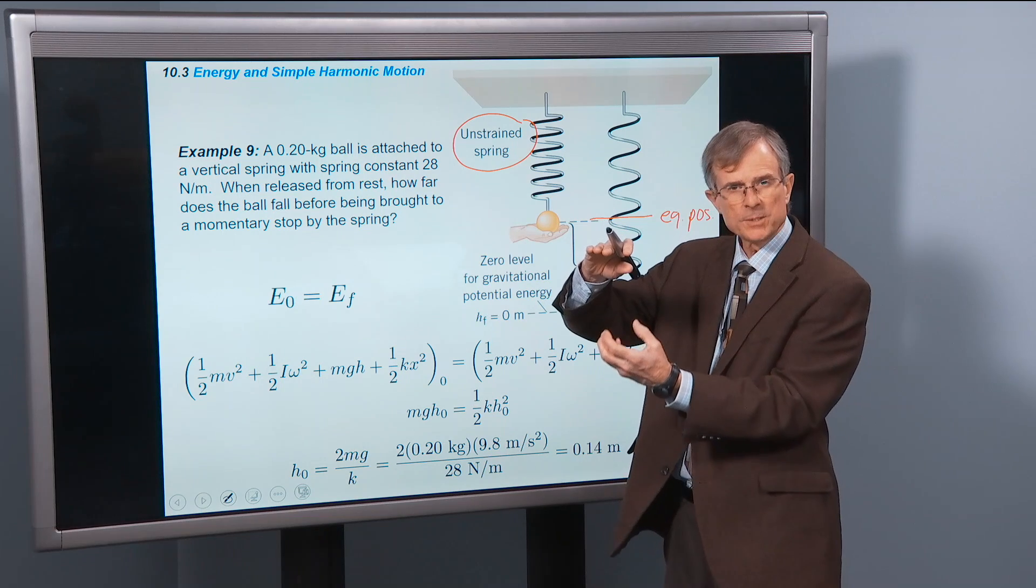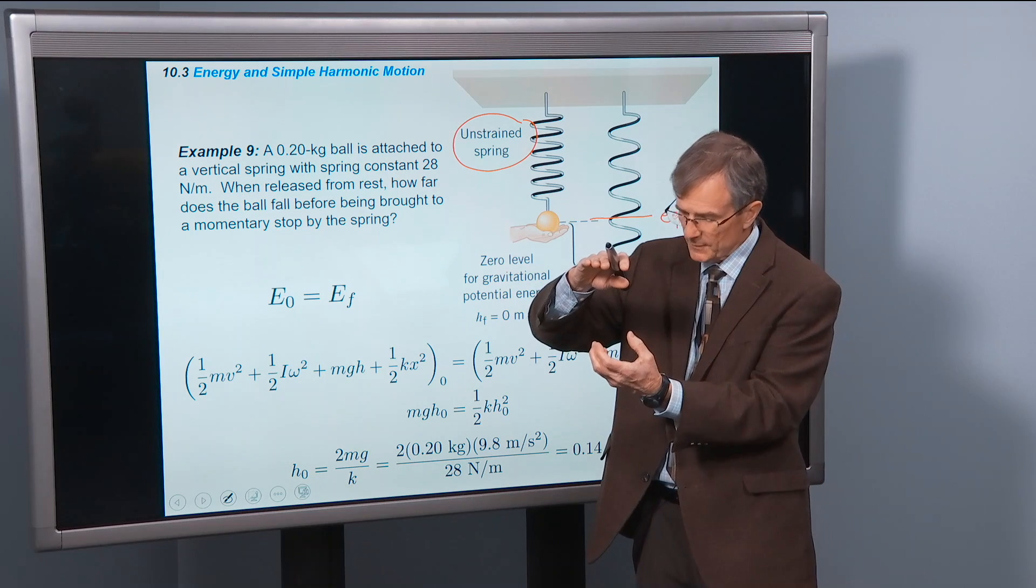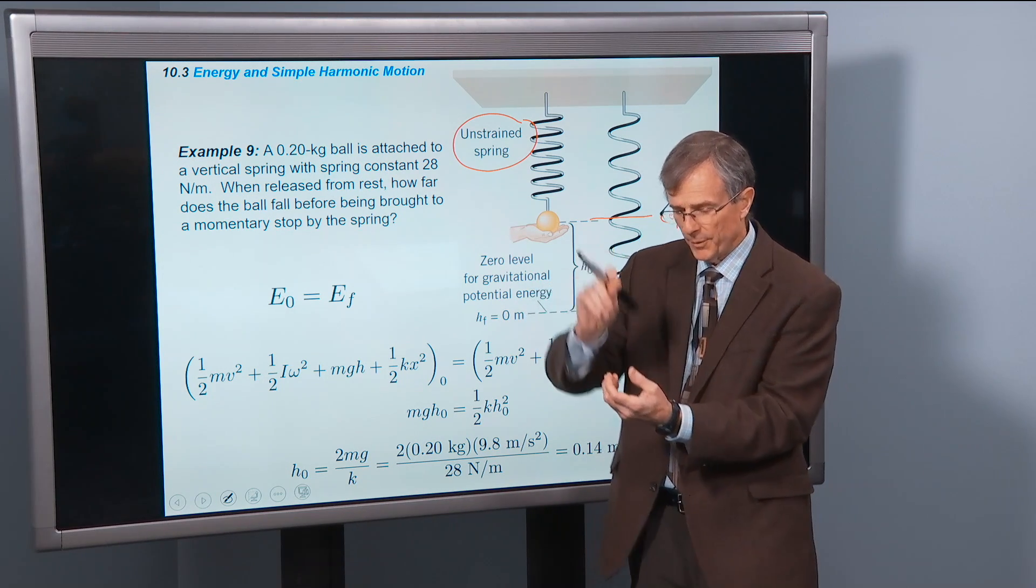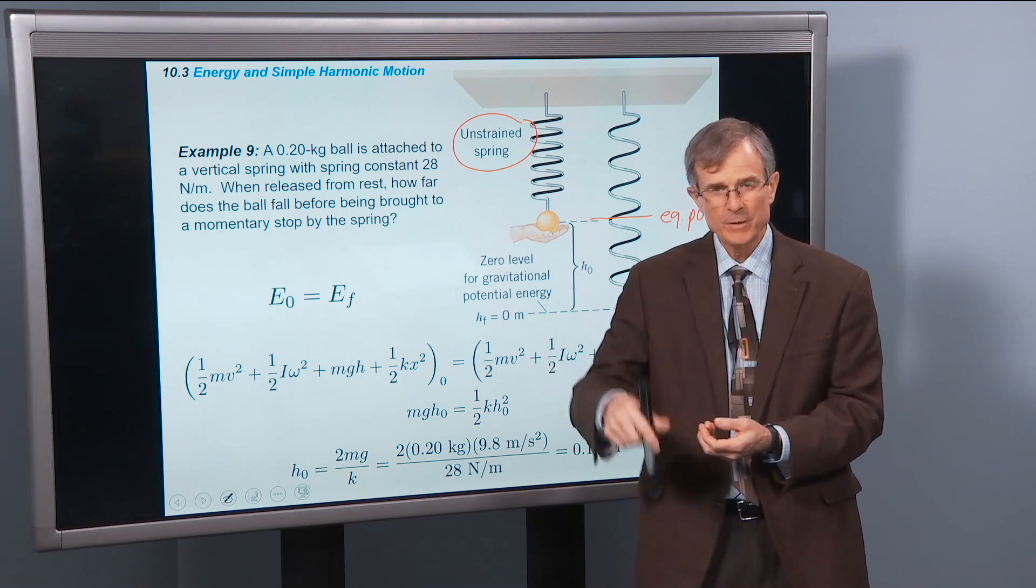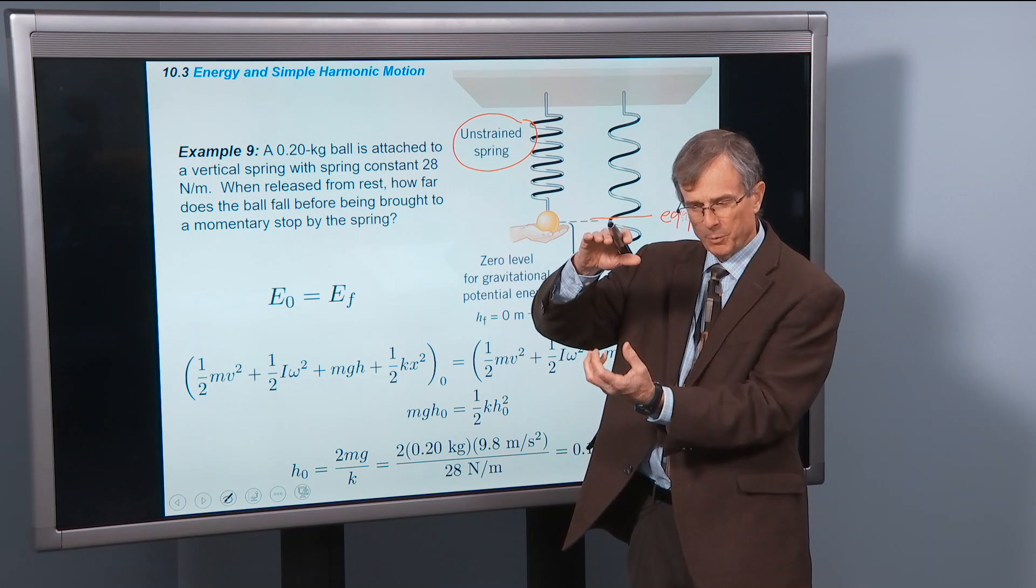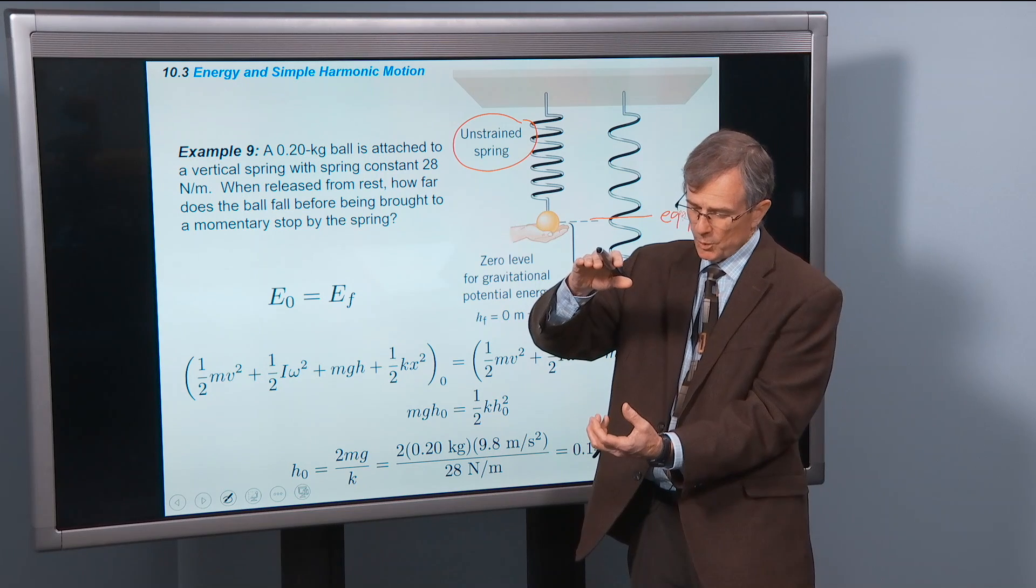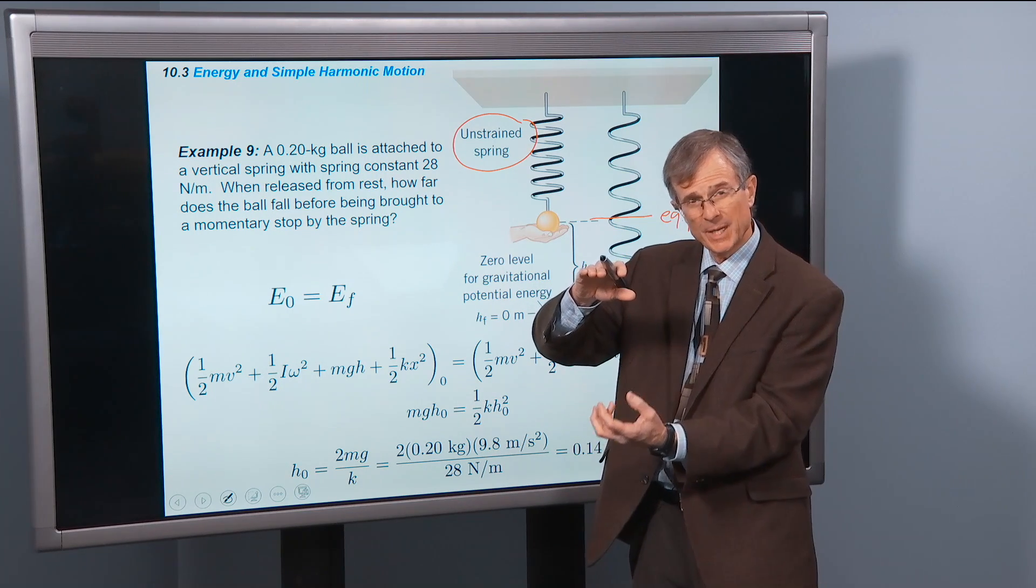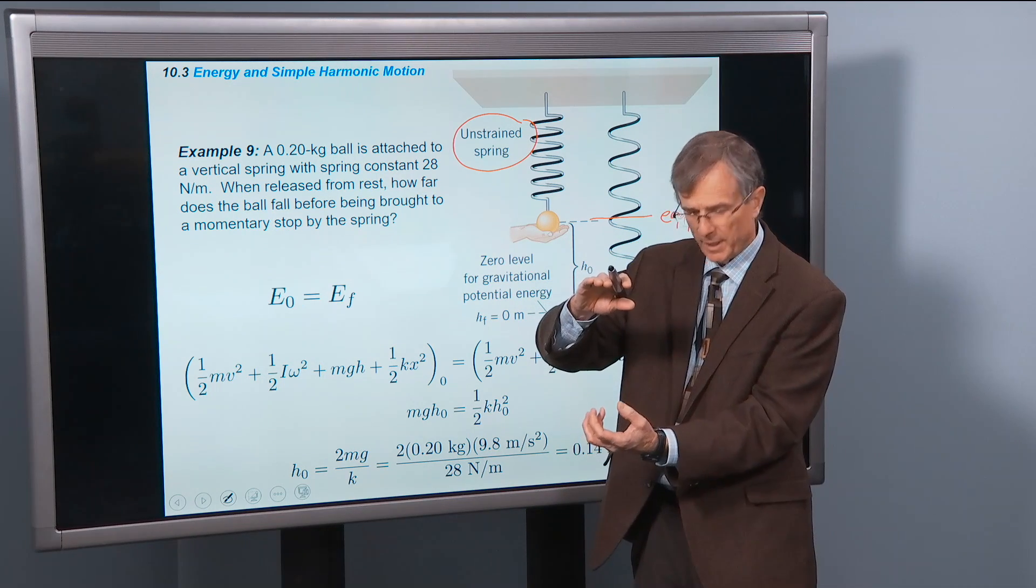And then as the spring stretches, the spring will exert a force upward on the mass. Gravity's pulling it downward, but that upward force gets greater and greater and greater the more that you stretch it. And so, sooner or later, the mass is going to stop. And that's what we're talking about. Between this point and this point, what happens?